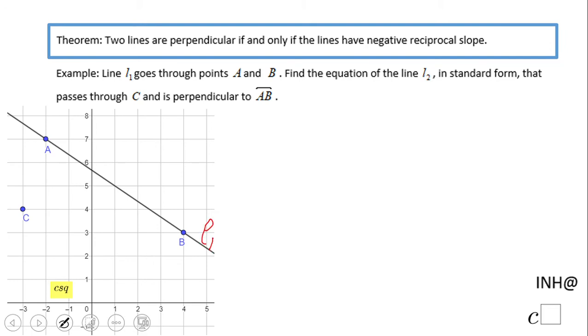This is a given line, goes through this point A and B. And we're looking for a line that is perpendicular, something like that, and goes through C. How are we going to do that?